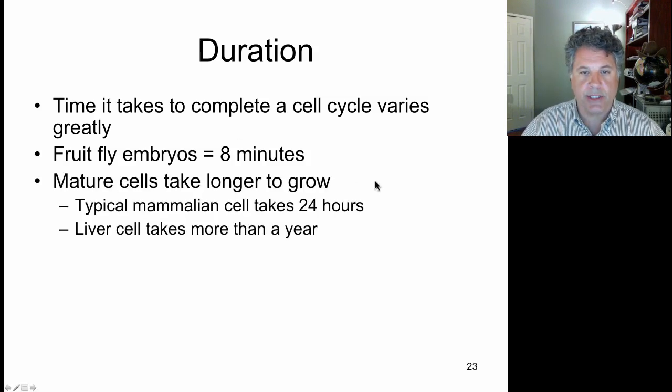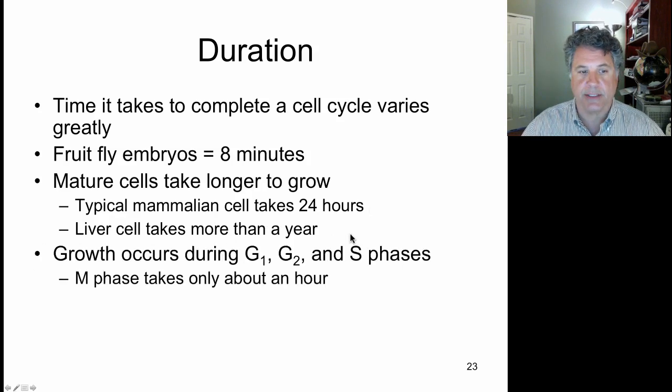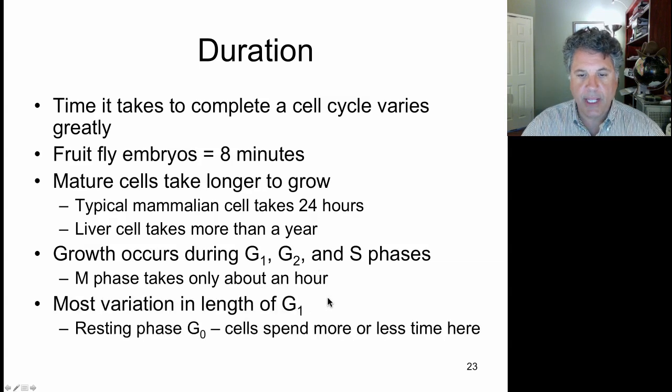Now in adults, mature cells take longer to grow. For example, a typical adult mammalian cell takes about 24 hours to complete a cell cycle. The liver is an exception, it takes more than a year to complete a cell cycle. Growth, as we've pointed out, occurs during all interphase stages. No growth takes place during the mitotic phase, and usually that takes about an hour in a eukaryotic cell. When we talk about variation in the length of the cell cycle, we're mostly looking at the variation that takes place in the length of the G1 phase.